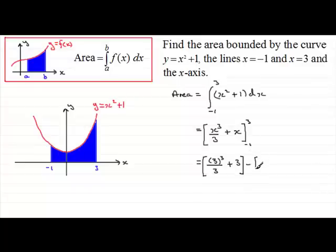And then we subtract what we get when we substitute the minus 1 in. So that would be minus 1 all cubed all divided by 3 plus minus 1. And we'll finish that square bracket off there.